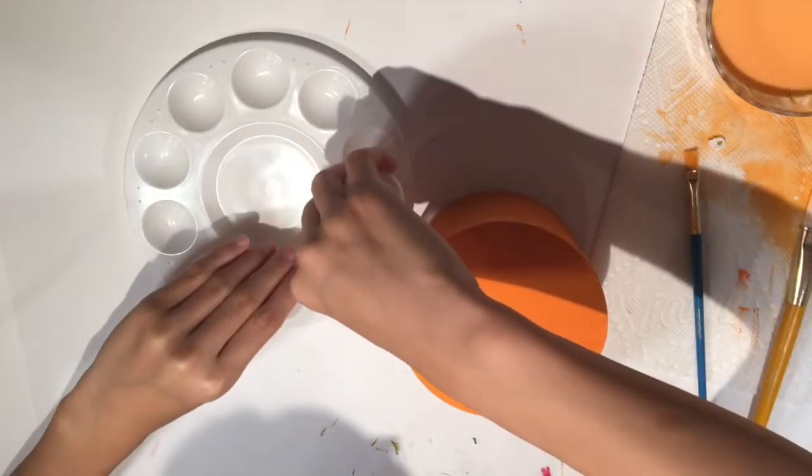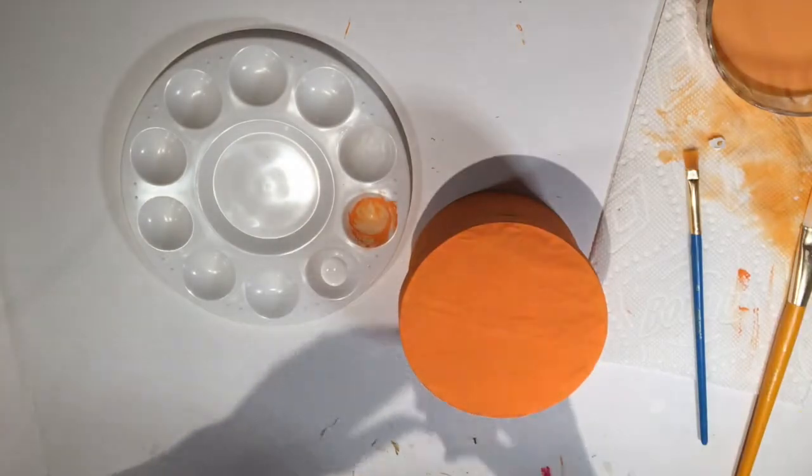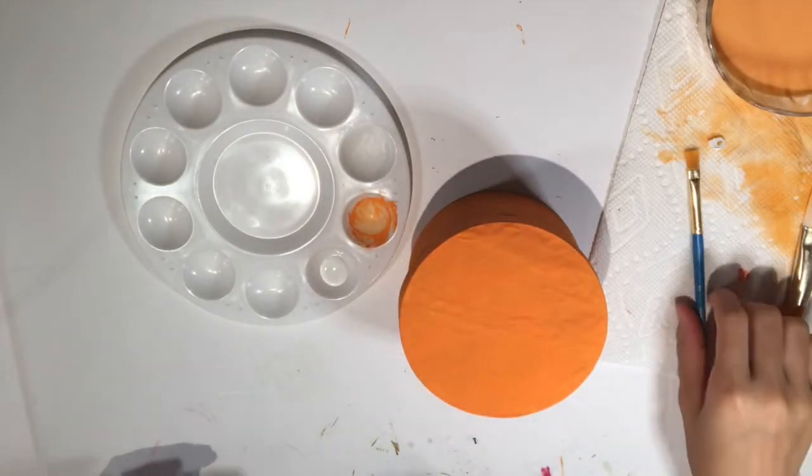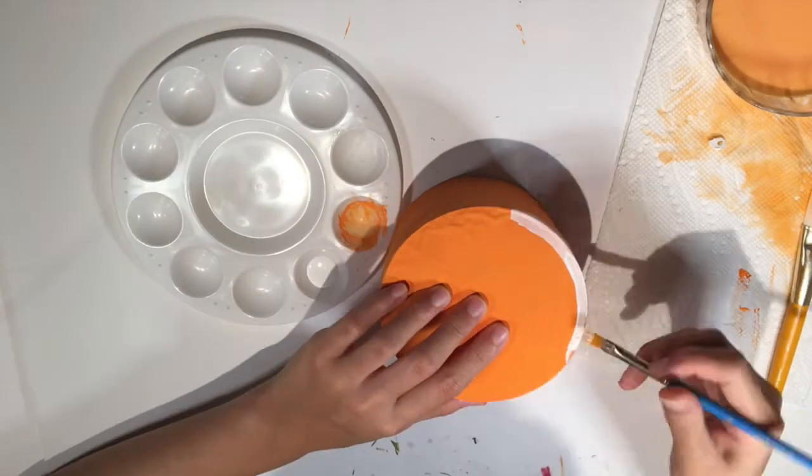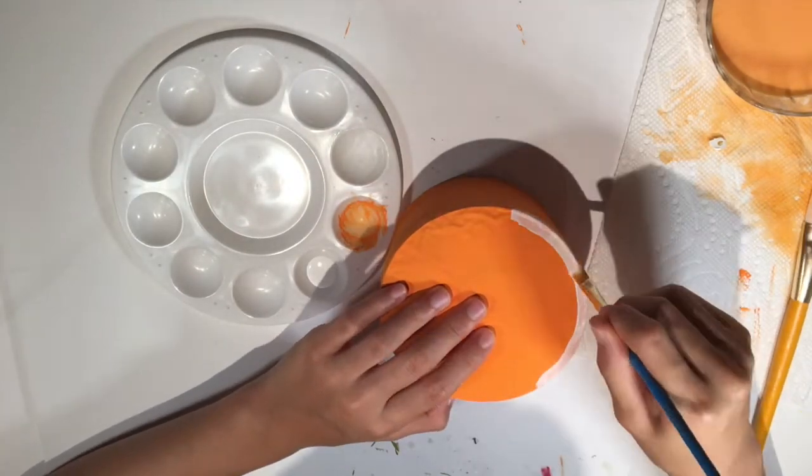Now I'm getting out some white paint to paint in the sort of white part of the orange, like the rind, I guess you could say. So I'm just slowly painting this circle around the top of the container.